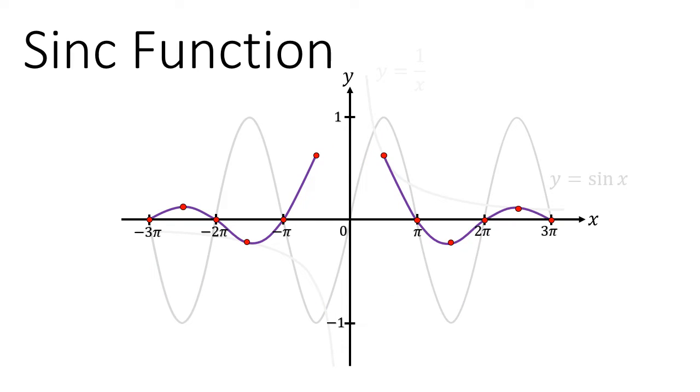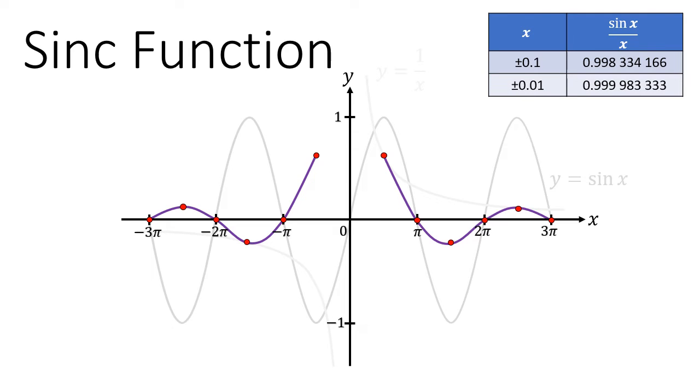A numerical approach would be just to construct a table and check the values of sin x over x when x is 0.1, 0.01 and just make x smaller and smaller and it seems quite obvious that the function tends to 1 as x tends to 0.